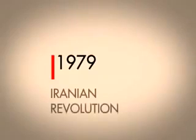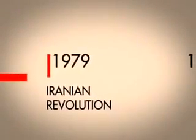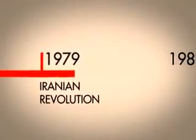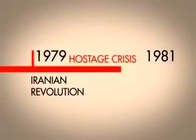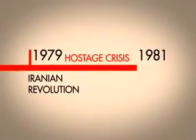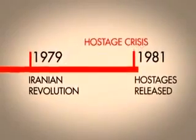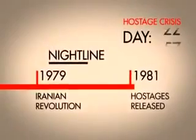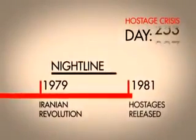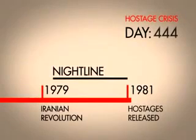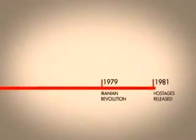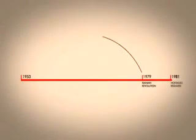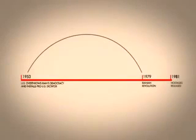For most Americans, the story begins in 1979 with the Iranian Revolution and the hostage crisis. A group of revolutionary university students took over the American Embassy in Tehran and held 52 diplomats hostage for 444 days. To help burn this into the American narrative, the news show Nightline was created with a nightly tally of the number of days since the crisis started. But to really understand, we have to go back to 1953, which is where the story begins for most Iranians.